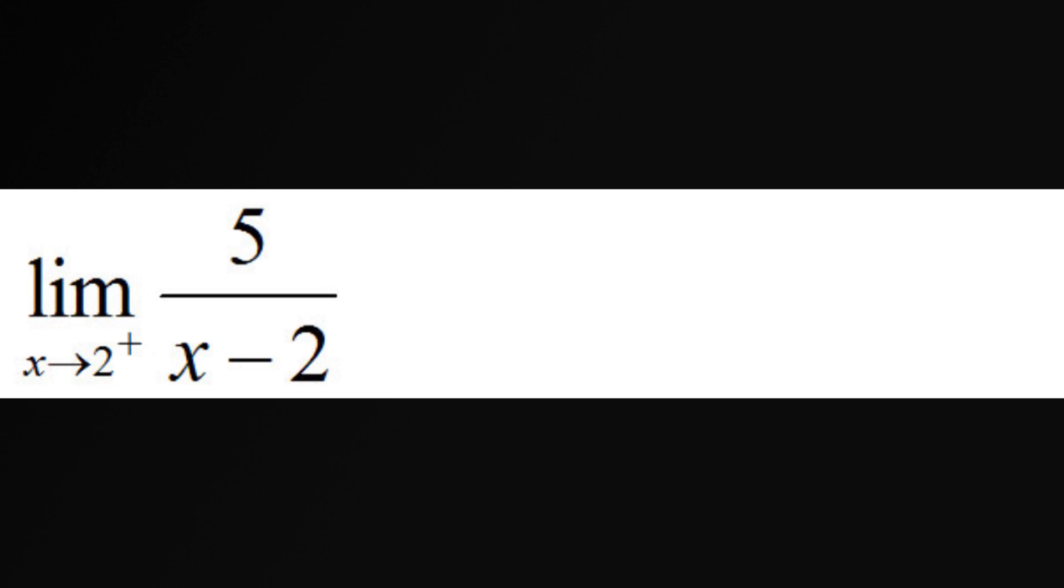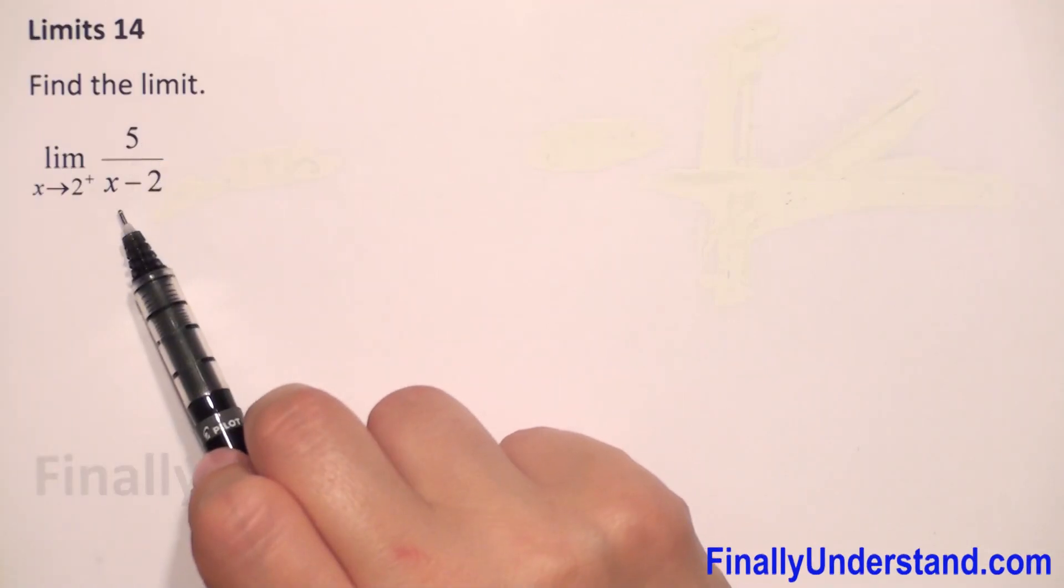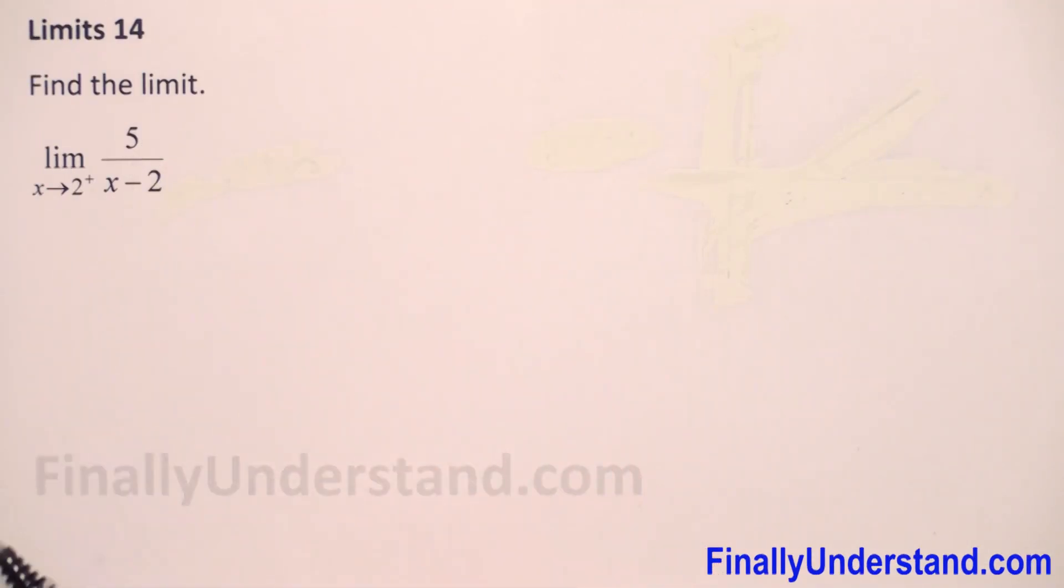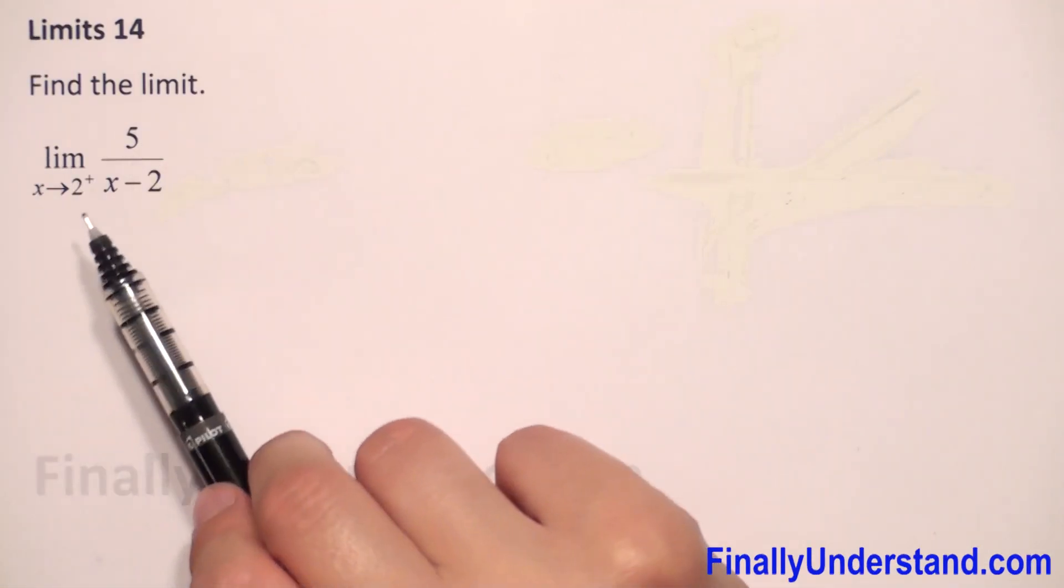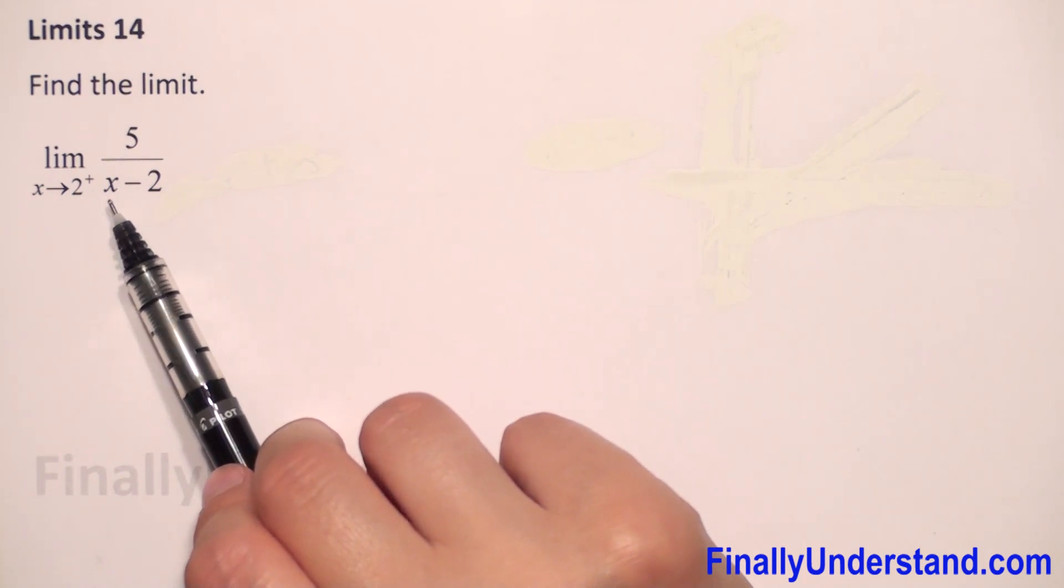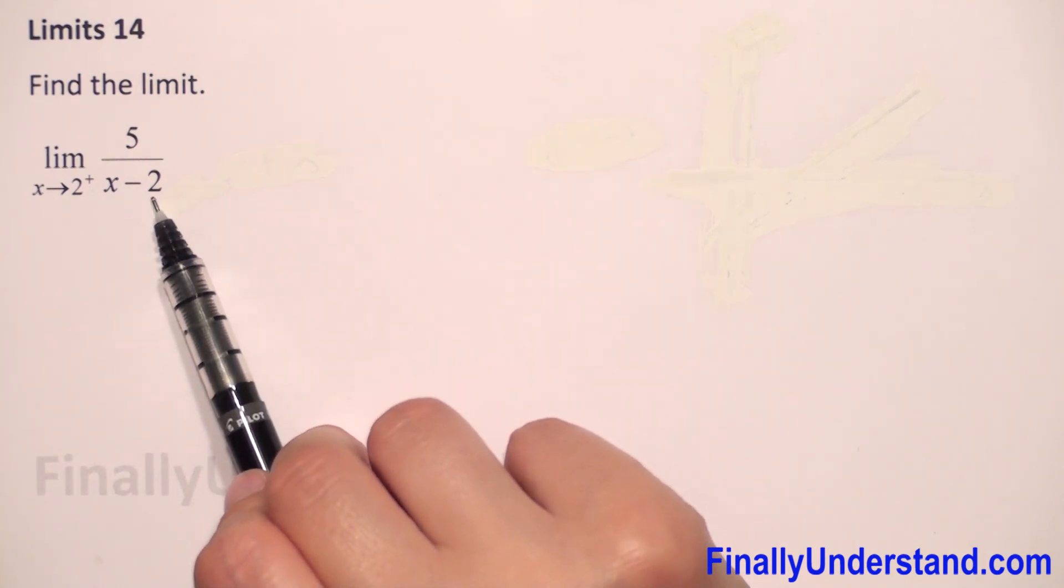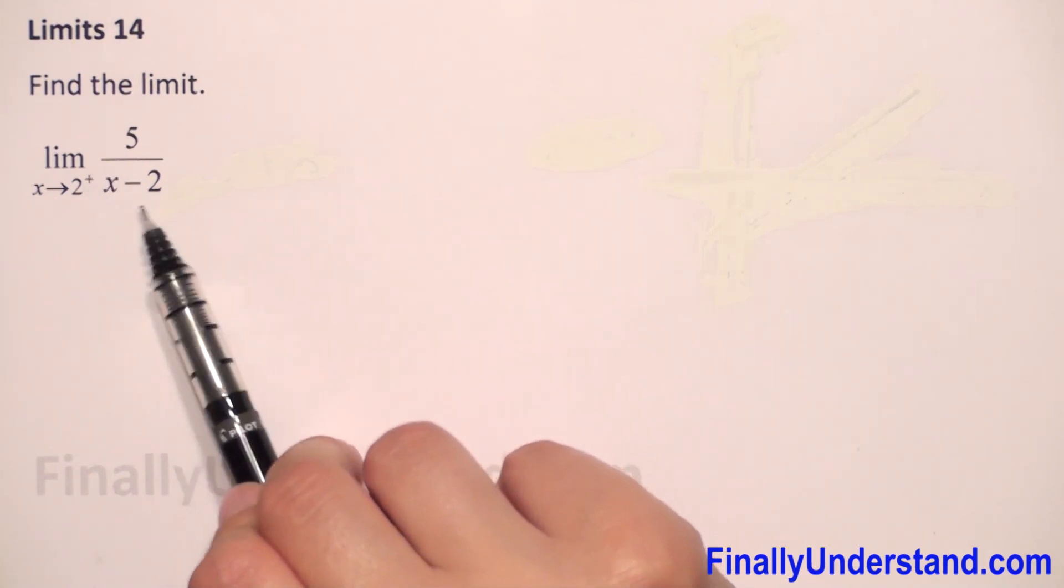We have to find the limit as x approaches 2 from the right of 5 over x minus 2. First, we have to check what happens when I replace x by 2. That will be 2 minus 2, which will be 0 in the denominator.